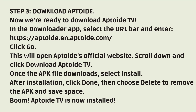Step 3: Download Aptoy. Now we're ready to download Aptoy TV. In the Downloader app, select the URL bar and enter the URL, then click Go. This will open Aptoy's official website. Scroll down and click Download Aptoy TV. Once the APK file downloads, select Install. After installation, click Done. Then choose Delete to remove the APK and save space. Boom! Aptoy TV is now installed.